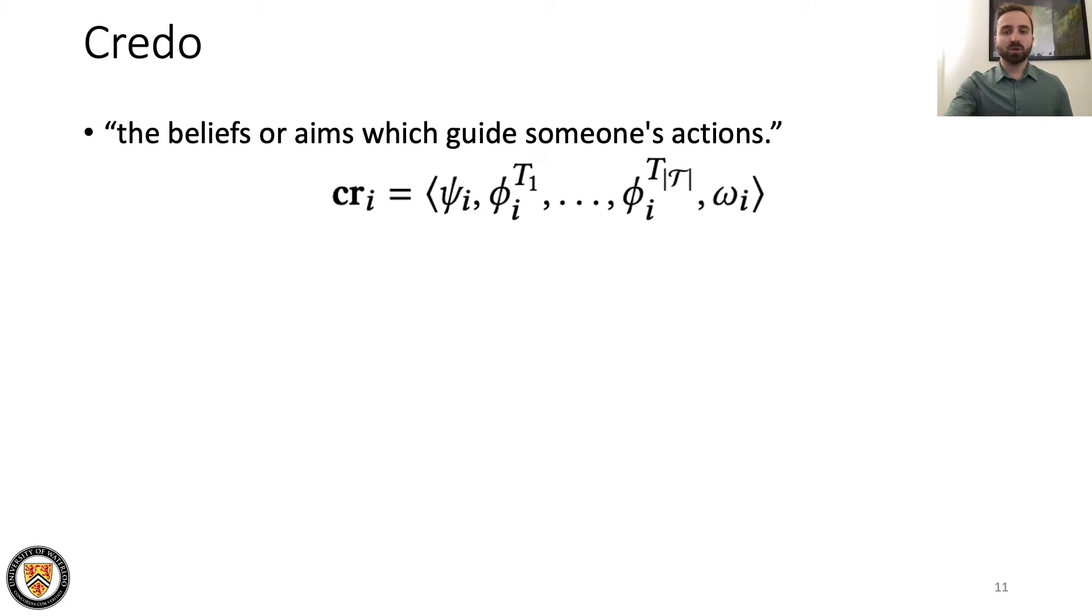We introduce credo, a model that defines how agents optimize their behavior. The noun credo, defined as the beliefs or aims which guide someone's actions, fits appropriately to describe our model of how agents optimize to achieve goals.